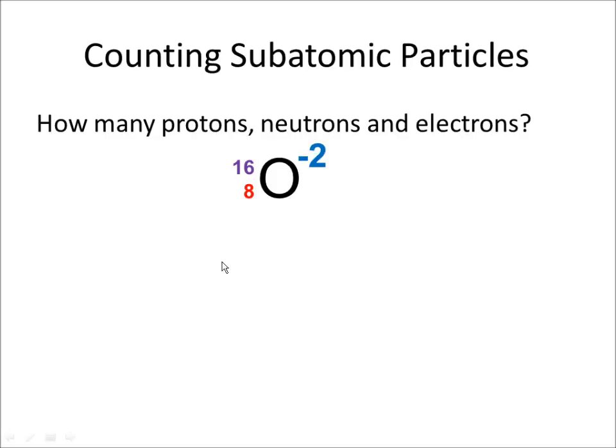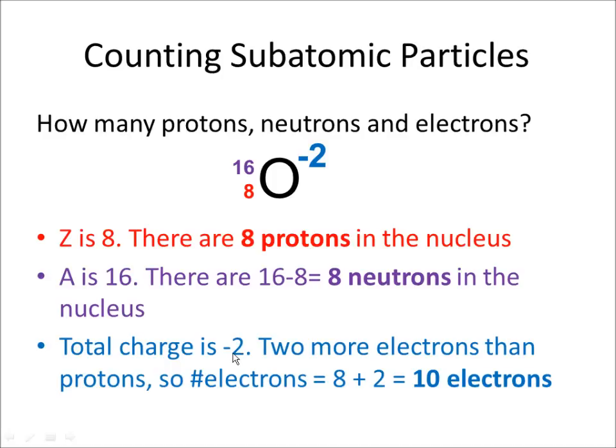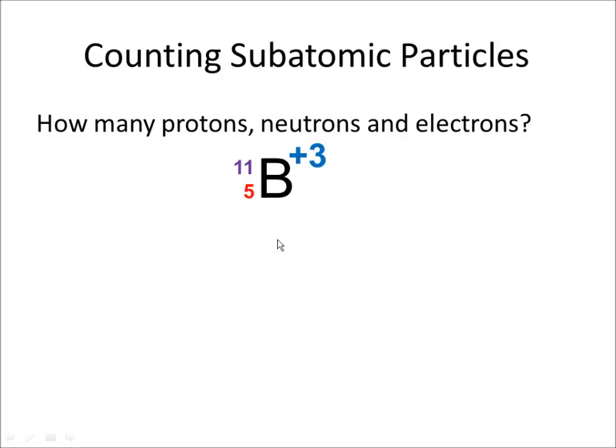How about this one? This is oxide. Z is 8. There are 8 protons in the nucleus. How many neutrons do you think there will be? There's going to be 8 neutrons, because I need to figure out where this extra mass comes from. It's 16 mass units, and there's only 8 protons. So there's got to be 8 neutrons in the nucleus. Total charge is negative 2. That means there's 2 more electrons than protons. So the number of electrons is 10.